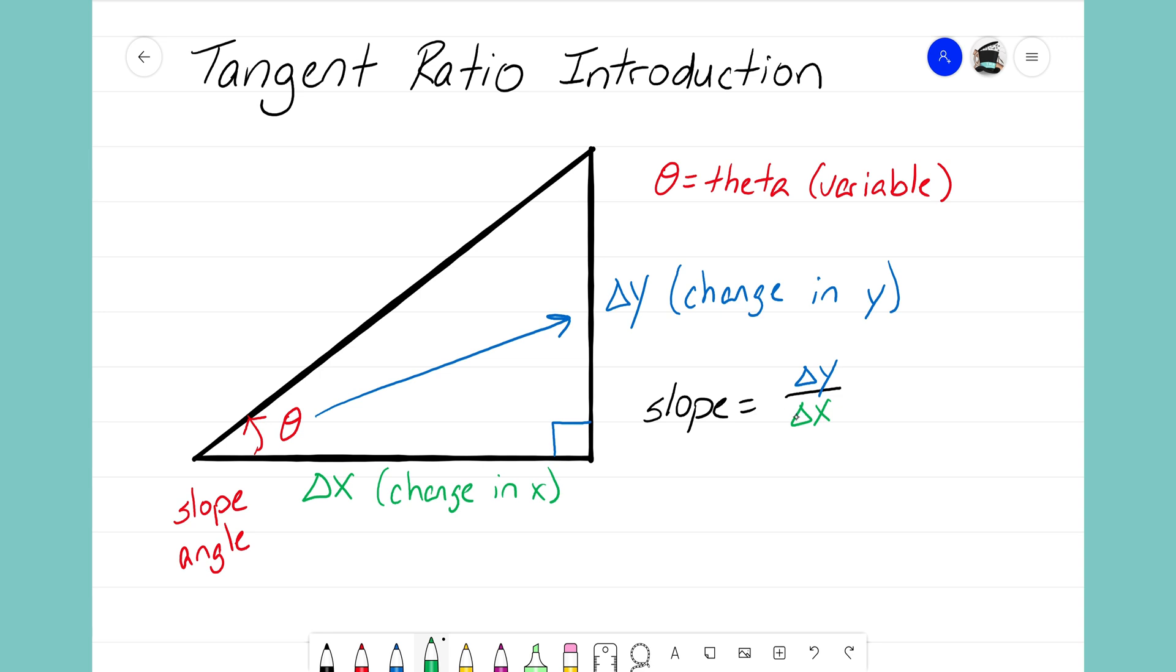Now what the point of the tangent ratio is in geometry is bridging this gap between what the slope is and how it relates to this angle. Every angle that we look at has its own slope. It opens up a certain amount—let's say 20 degrees or 30 degrees or 45 degrees. Every single angle here is going to create a different slope, and we refer to that as the tangent ratio.